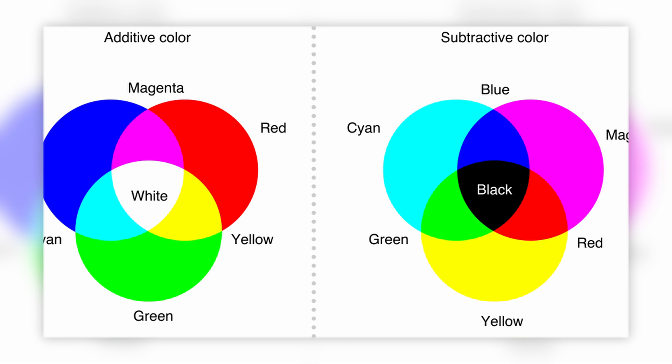If you want to work in a subtractive color space, we have to look at another color model known as CMYK — an acronym standing for cyan, magenta, yellow, and key, which represents black. This model is commonly used in print media such as magazines and newspapers, where a combination of cyan, magenta, and yellow ink absorbs light from a particular spectrum to reproduce a color we can see. It's known as subtractive color because you're eliminating wavelengths of light as they pass through or get absorbed by a specific ink or film, until you end up with an output color.